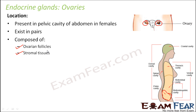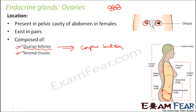The ovarian follicles are cyst-like structures present inside the ovary, and these follicles enclose the egg inside. The main purpose of the ovary is to release the egg during ovulation. In each menstrual cycle, one ovum is released. Once the egg is released, the ruptured follicle forms a structure known as the corpus luteum.